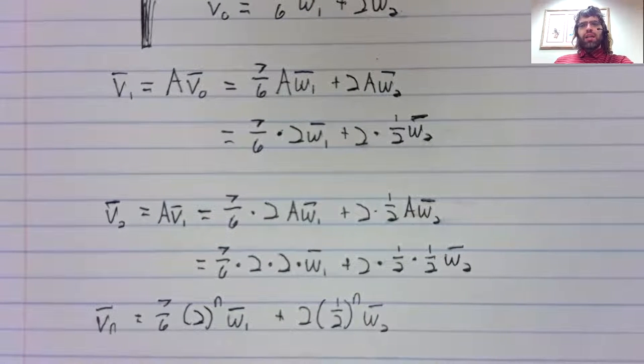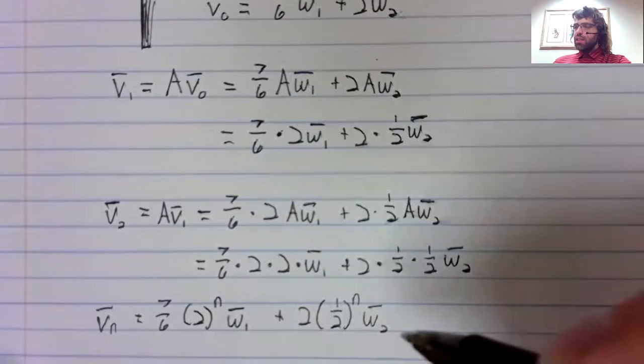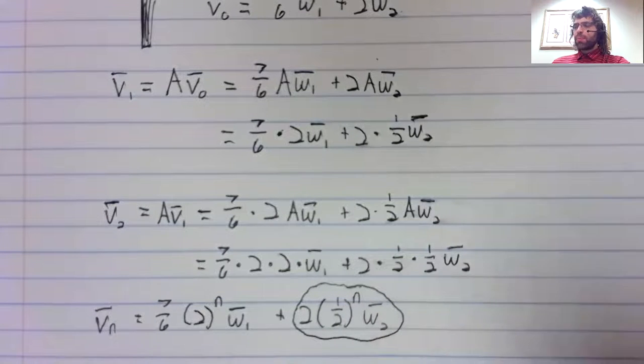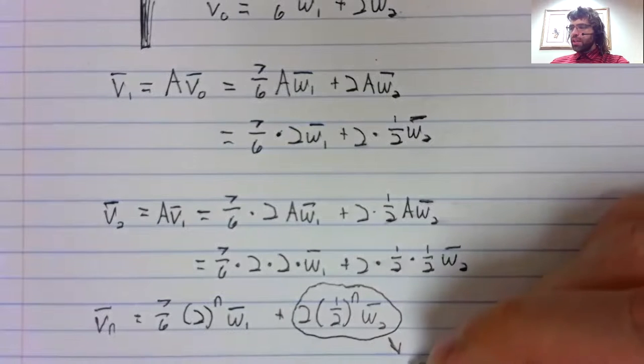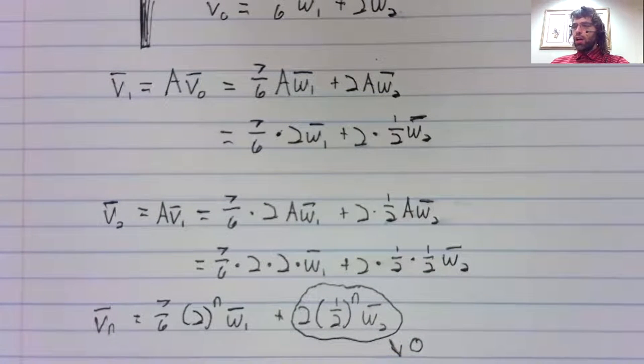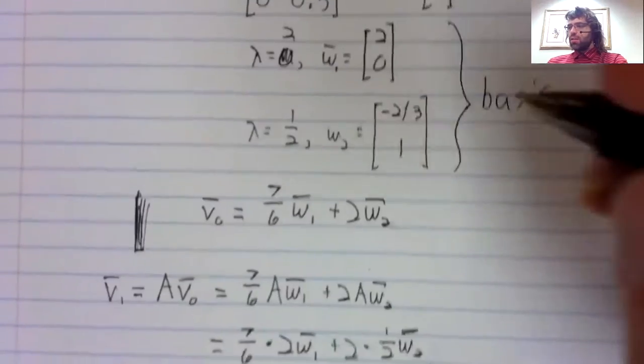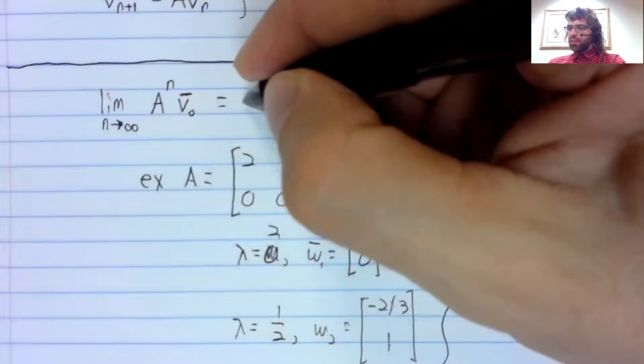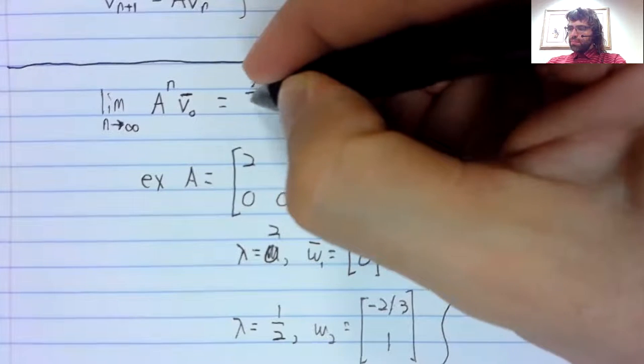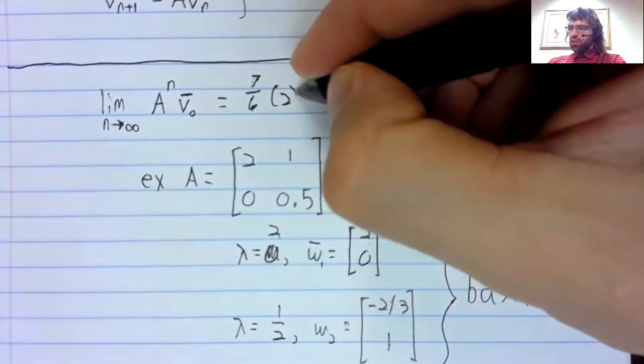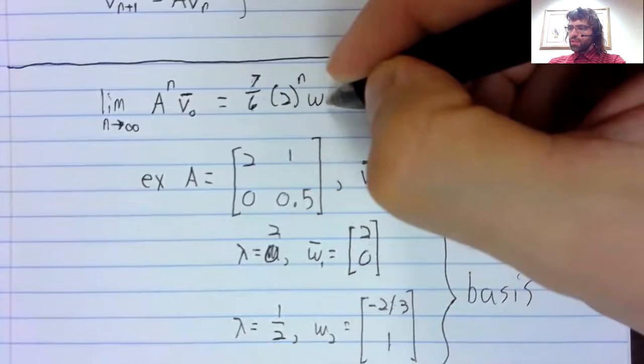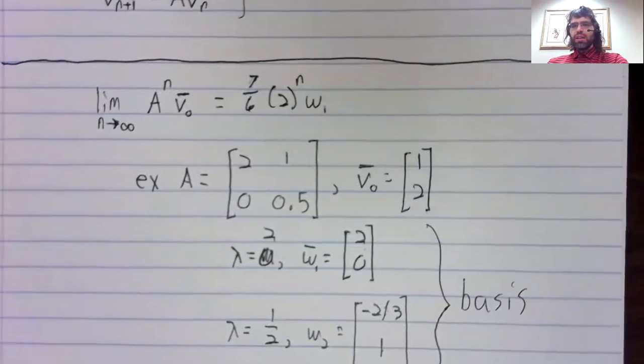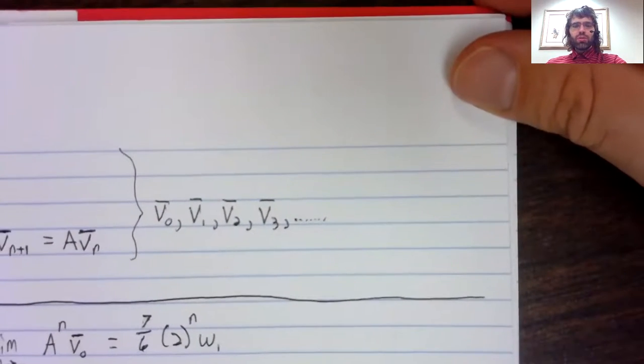And now we're taking a limit as n goes to infinity. As n goes to infinity, one half to the power of n is going to zero. So this limit that we were looking to find—this is a bit odd notationally, but it's the limit as n goes to infinity of this. And we're almost out of space, but we're also almost done.